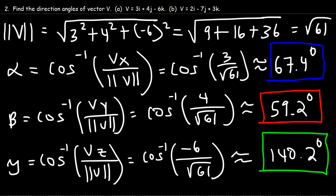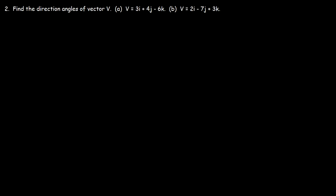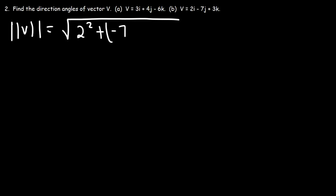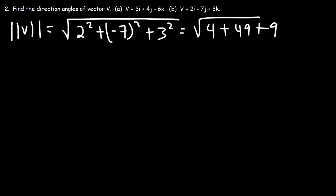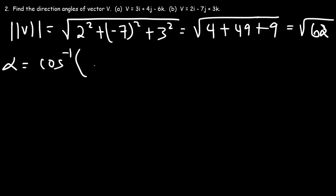Now it's your turn — try part B: calculate the three direction angles of vector v. Just like before, start by calculating the magnitude: the square root of 2 squared plus negative 7 squared plus 3 squared equals the square root of 4 plus 49 plus 9, which is the square root of 62. Alpha is the arc cosine of the x component 2 over √62, which is approximately 75.3 degrees.